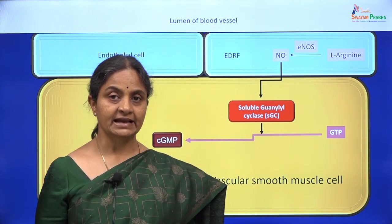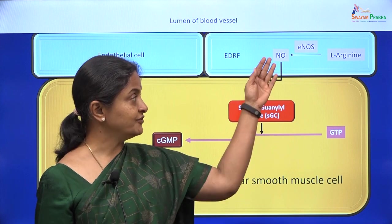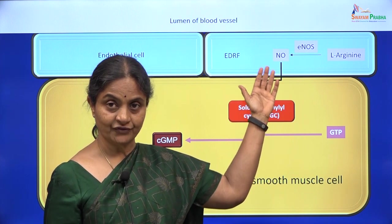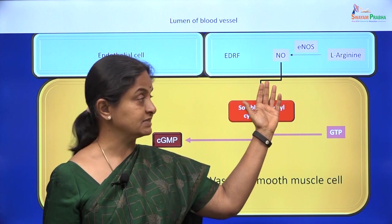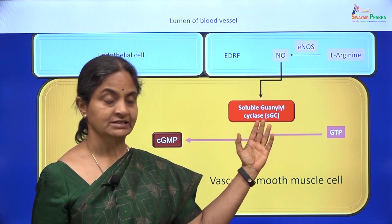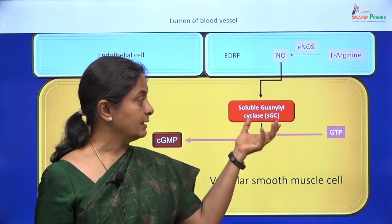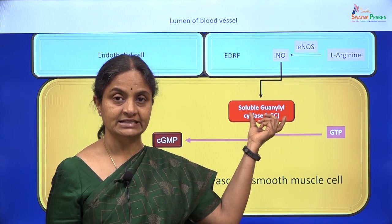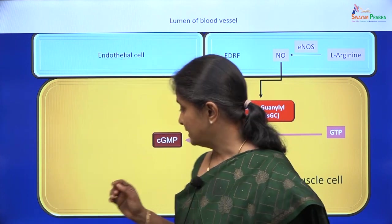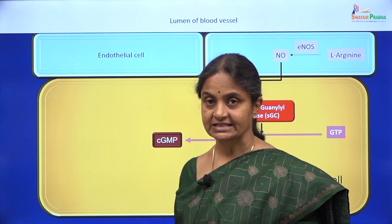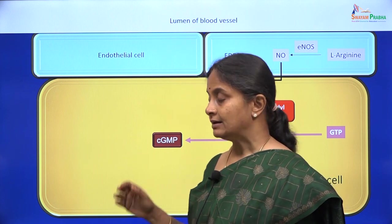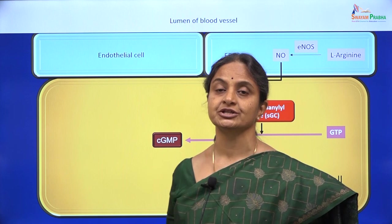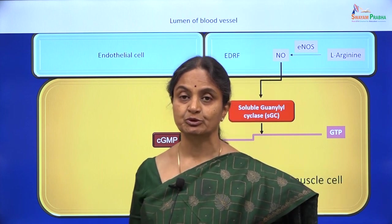Nitric oxide, being a gas, diffuses through the membranes of the endothelial and vascular smooth muscle cells, enters the smooth muscle cell, and activates the enzyme soluble guanylyl cyclase, thereby increasing cGMP levels within the cell. That is one way in which nitric oxide induces relaxation in the vascular smooth muscle cell.